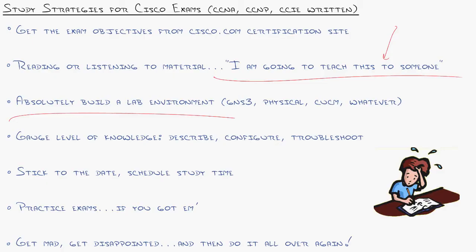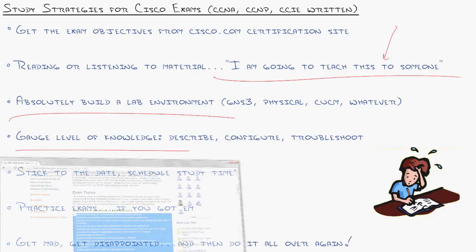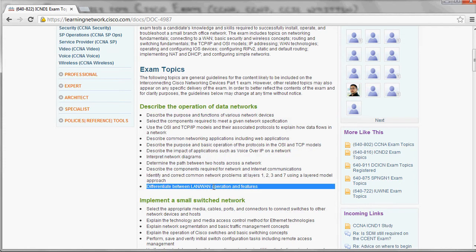Then gauge your level of knowledge: describe, configure, or troubleshoot. You got to look at each topic on that exam objective list from Cisco's website. You have to say, okay, can I describe LAN/WAN features? I mean, that's one level. Can I go to somebody and tell them I know what LAN/WAN operations or features are?